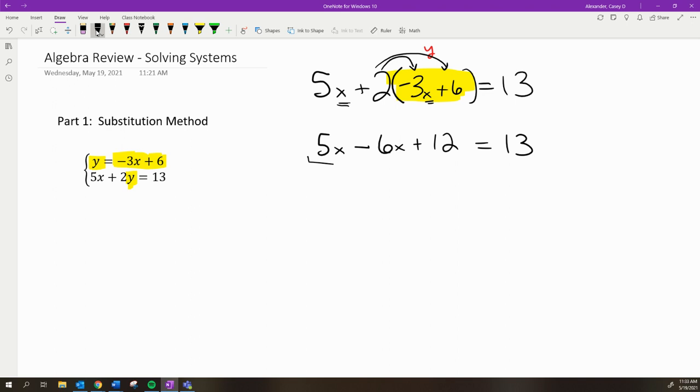And then 2 times 6 is +12. Now I can continue solving because I have two like terms: the 5x and the -6x. That becomes -x, or -1x, because 5 - 6 = -1.